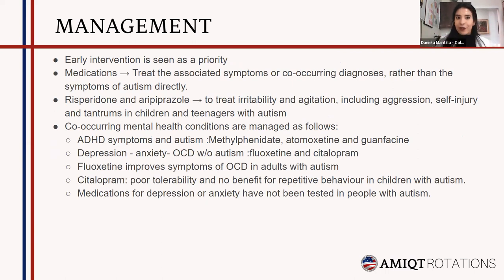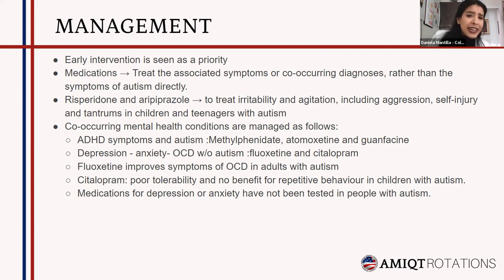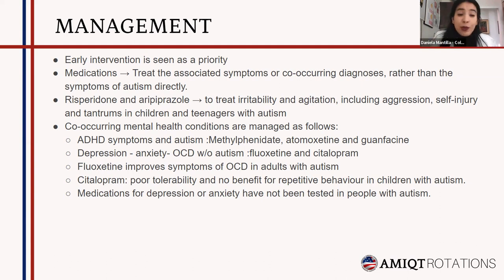Let's focus on management. Early intervention is seen as a priority and is what we must focus on to help these patients function better in the future. Regarding medications, those with evidence of benefit for autism treatment address associated symptoms or co-occurring diagnoses rather than the core symptoms of autism directly. So in management, we treat epilepsy, ADHD, and other co-occurring conditions — because for autism itself, there is currently no direct pharmacological treatment. Autism is an extremely heterogeneous disorder, and individuals can have co-occurring disorders that vary in severity.